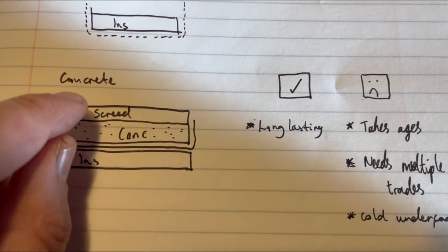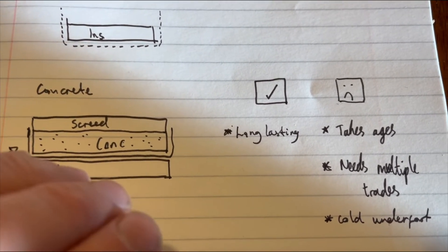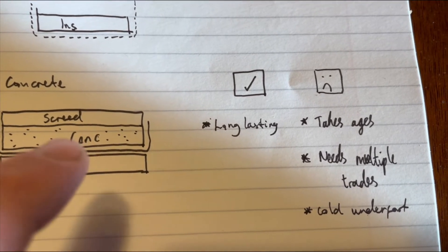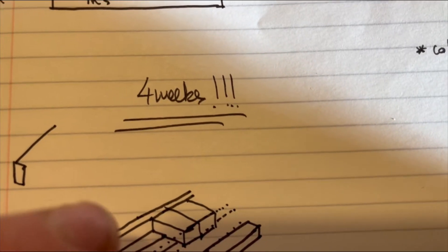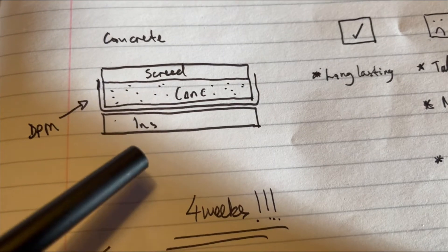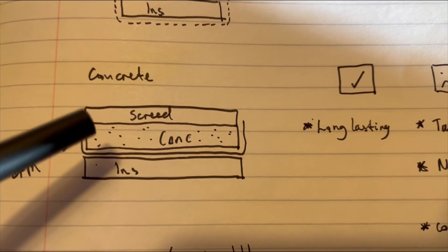As well as the fact that unless you've got a very good screeder, your floor can end up being all over the place, and that means you've got two separate stages of getting people to do the concrete for you as well as the screed, and it can take four weeks to dry. So whatever flooring you're putting on top of that, you're going to have to wait four weeks until you can do it.